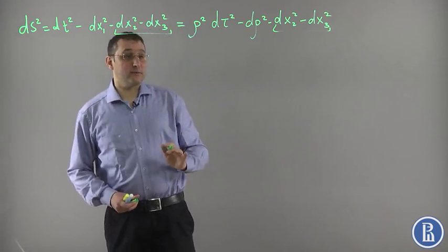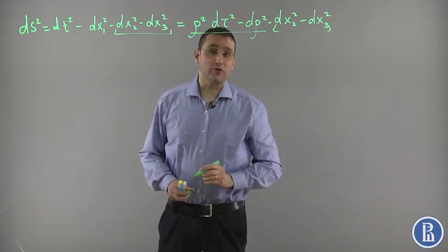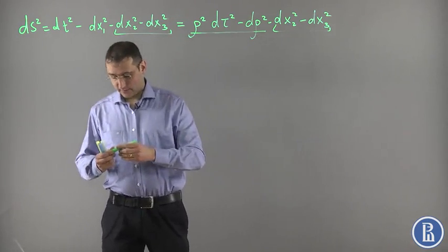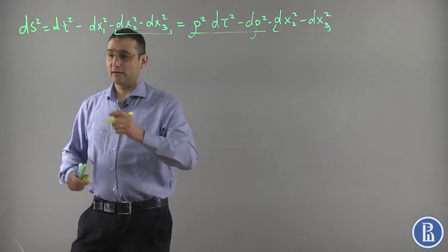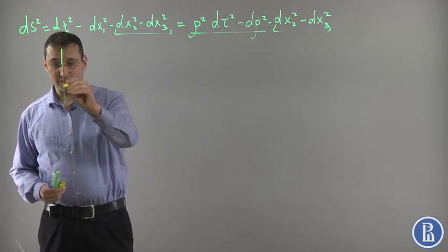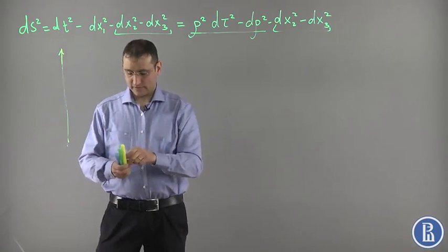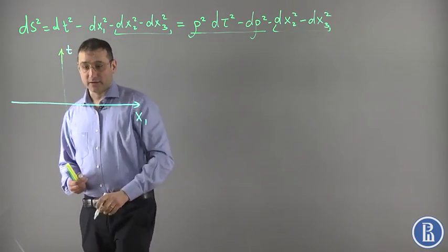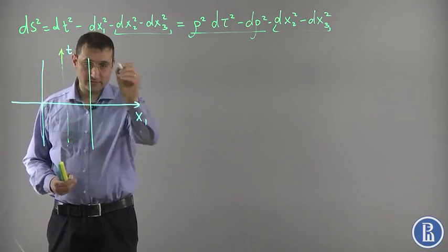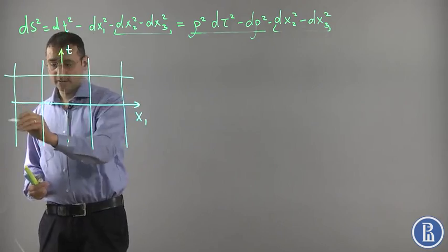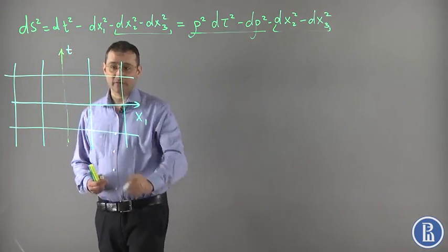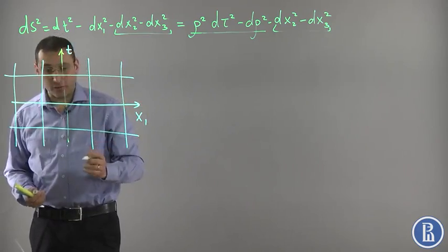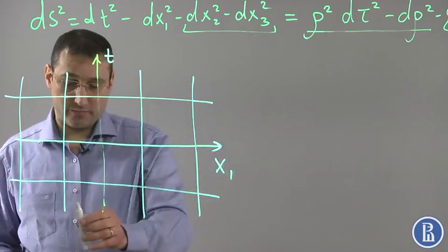The first thing I wanted to explain is why I say that this metric describes a non-inertial reference frame corresponding to constant eternal acceleration. Let us recall that originally our coordinate lattice was built as follows. We had original coordinate t, original coordinate x1, and lines of constant x1 were just vertical lines, and lines of constant t were like this. The physical meaning of lines of constant x1: these are just world lines of observers or particles which are inertial, which perform inertial motion — in this case, just stationary.